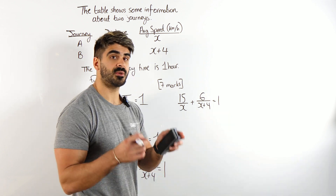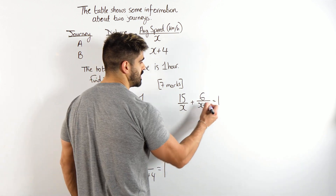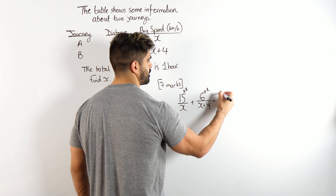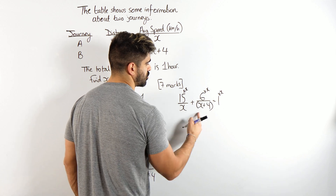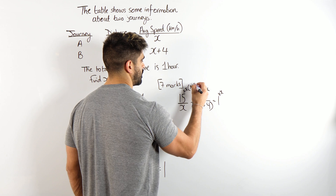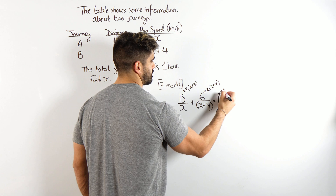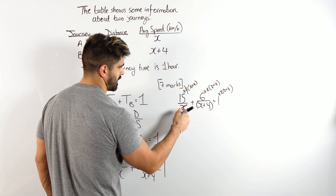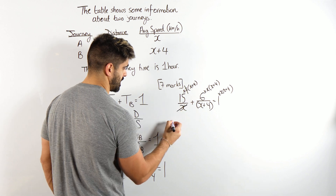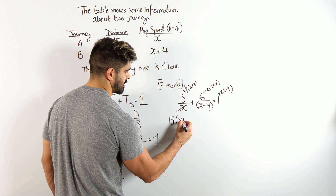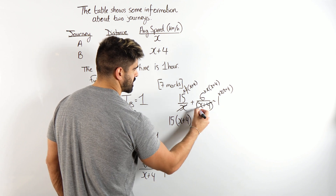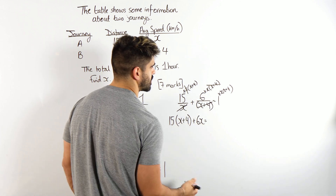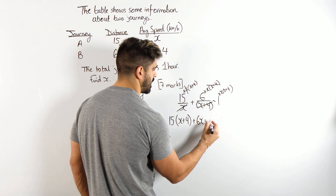Because there are three terms, we have to multiply every single term by x to get rid of that denominator, and multiply by x plus 4 — treating it as one term. Now we can just see what cancels. Here the x cancels — an x on top, x on the bottom — so we're left with 15 lots of (x plus 4). Plus here the (x plus 4) cancels, so we're just left with 6 times x, which is 6x, equals 1 lots of x(x plus 4).